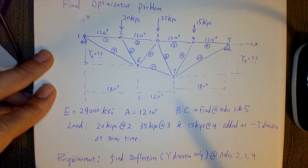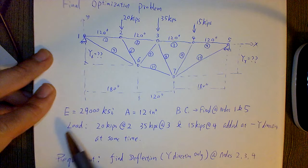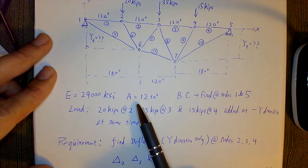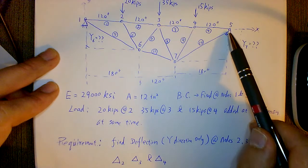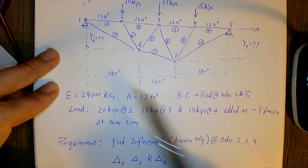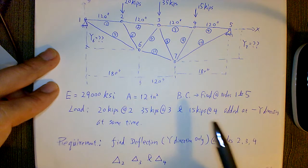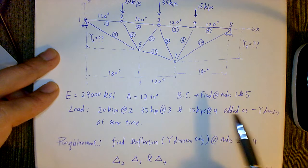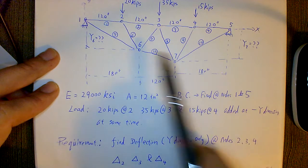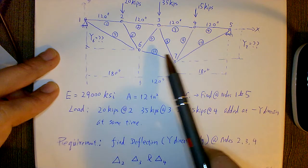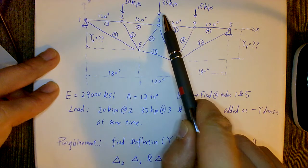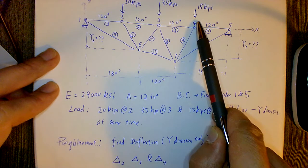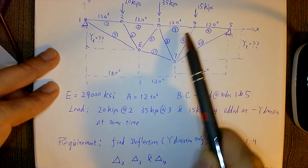You have the E, A, and boundary condition—the two degrees of freedom are all fixed at 1 and 5. Then the loading condition is a little bit unsymmetric: we got 20 kips here, 35 kips here, and 15 kips here.